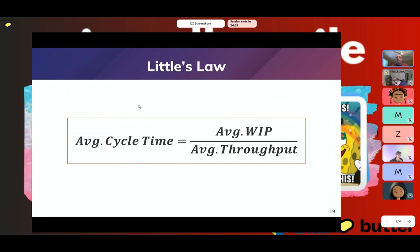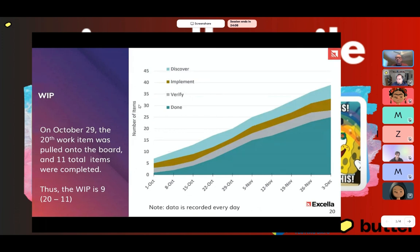Little's Law is beyond today's full discussion, but it looks like this: average cycle time equals average WIP divided by average throughput. This formula is governed by five very important assumptions. You cannot simply plug in a WIP and a throughput and expect to know what your cycle time is going to be — that is not how this law works. It's more of a retroactive law. After you've built out something in your CFD, you can use this to understand the relationship of these metrics.